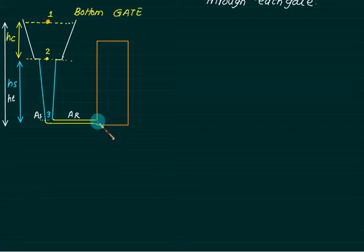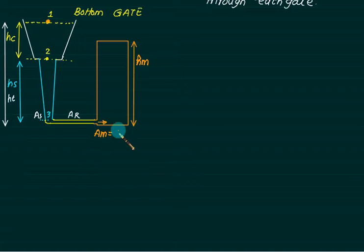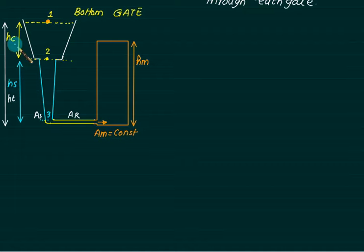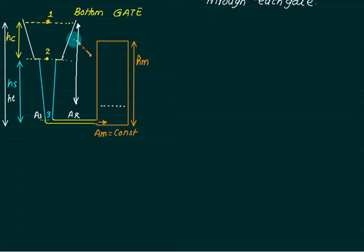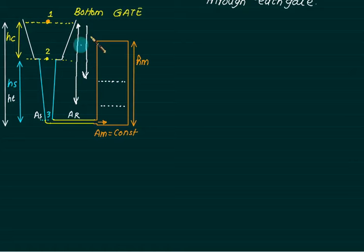In the bottom gate, molten metal will enter from the bottom side. The height of the mould is HM and the cross section area AM is constant. Initially when completely empty, the velocity head equals hc + ht. As the fluid level rises, the net available head changes. So in the bottom gate, the head is variable.